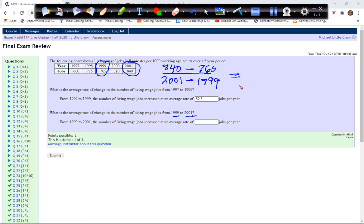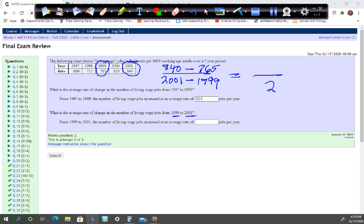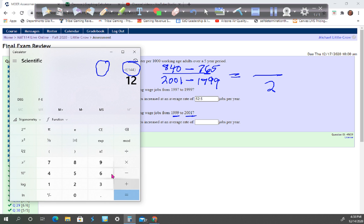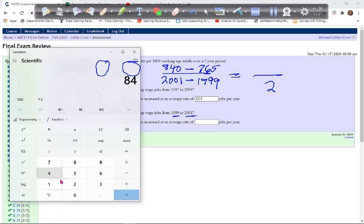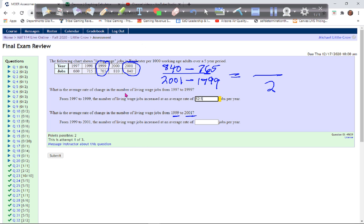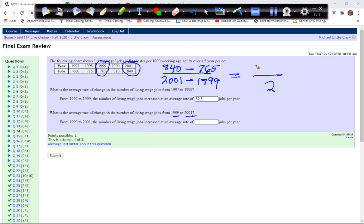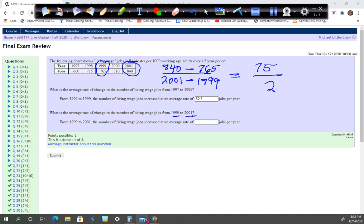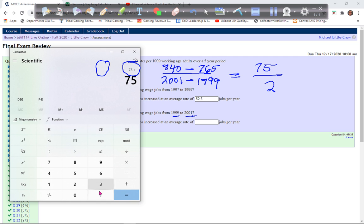99 to 2001 is going to be two years again, but this time 840 minus 765 is going to be 75. And then we want to divide that by 2, so we're going to get 37.5.